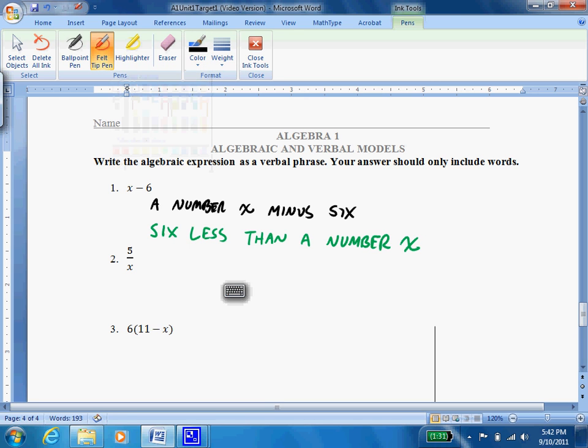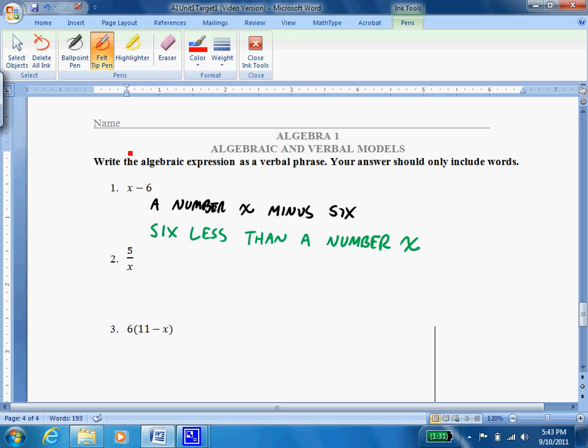Alright, now there are tons and tons of different ways that you could say these. As long as you have the order correct and you have an appropriate word for that operation, you'll be fine and you'll get the problem correct. Alright, so here's our next one for number 2. And I'm going to try to use a formal fancy math word here. So since it's division, I'm going to use the word quotient. And I'm going to pay attention to my order. So I'm going to say the quotient. And that little keyboard thing is getting in the way. That's kind of annoying. So I have the quotient of 5 and a number x. And again, especially with division, I have to make sure I write things in the correct order.